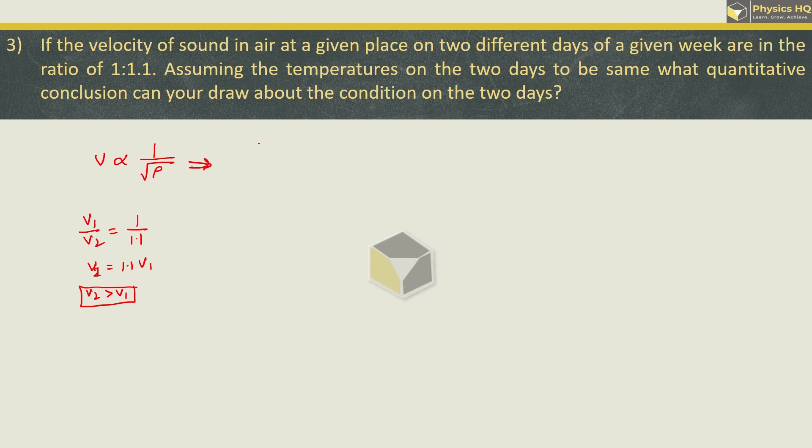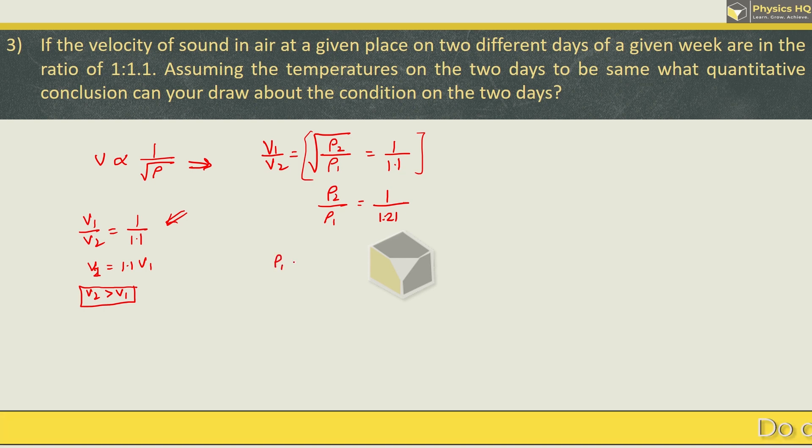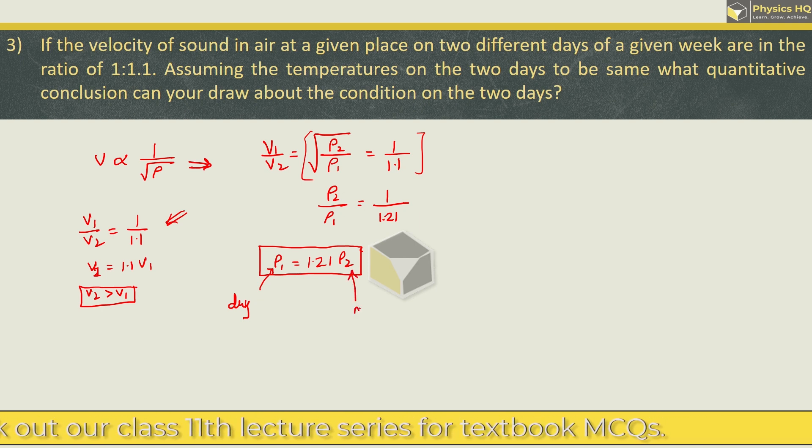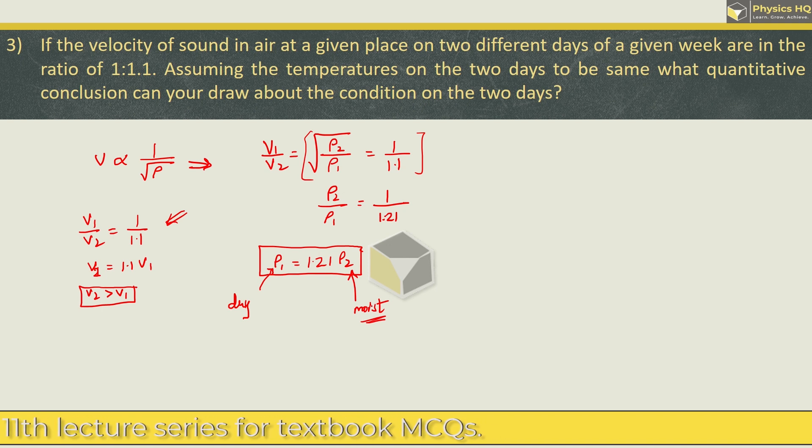Now by using this relation we can say v1 upon v2 is equal to under root of density on the second day upon density on the first day. Now this velocity ka ratio we have which is 1 by 1.1. Let's square this. So it becomes density on the second day upon first day is 1 by 1.21. This is 11 ka square which is 121. So from this we can say that density on the first day is 1.21 times the density on the second day. So first day pe density was higher, second day pe density was lower.